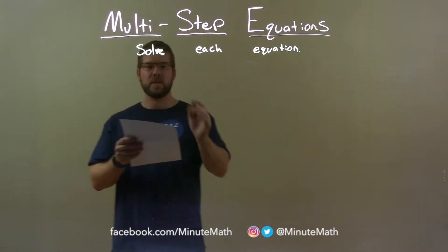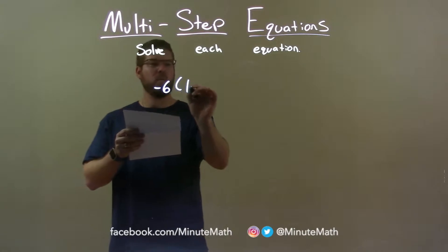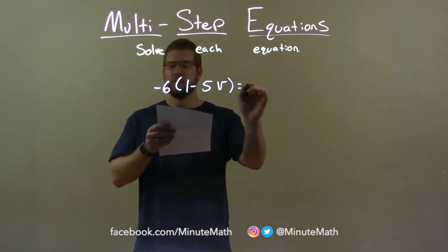If I was given this equation, negative 6 times 1 minus 5V equals 54.